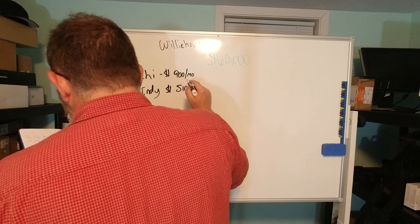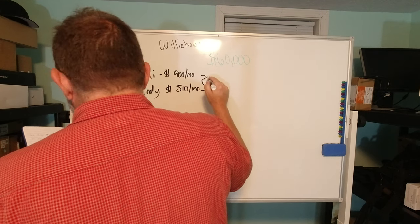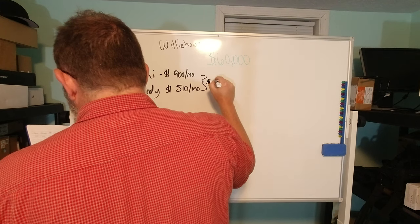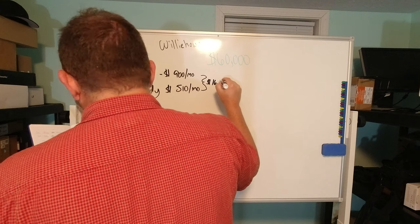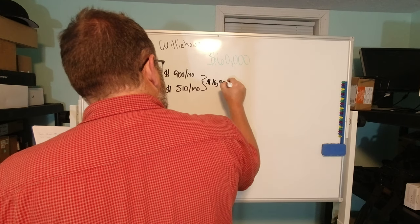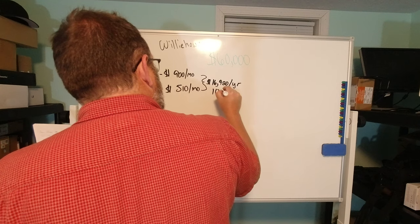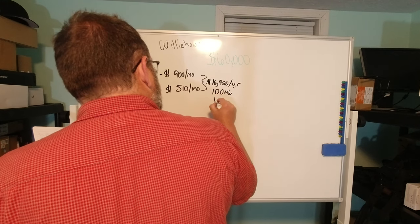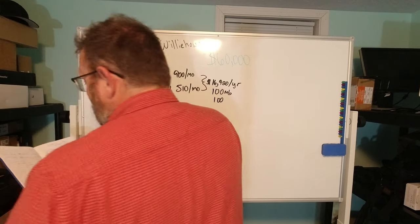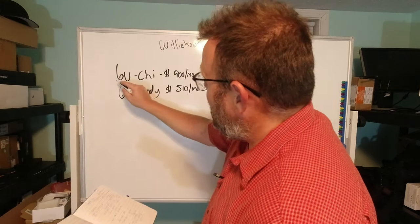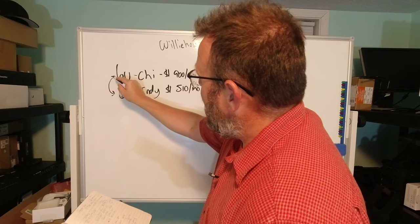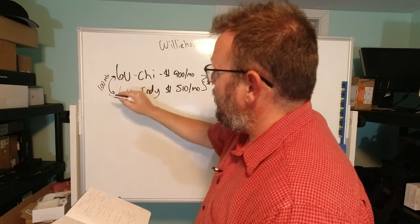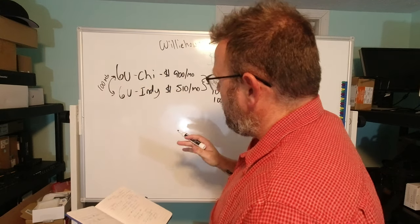And so if you math these out, my total yearly cost for this, for my offsite is $16,920 a year. That gets me 100 megabits between the sites, and then it also gets me 100 megabit cross-connect between the two. And so what that means is that means I actually have a 100 megabit connection in my cabinets directly between these sites.